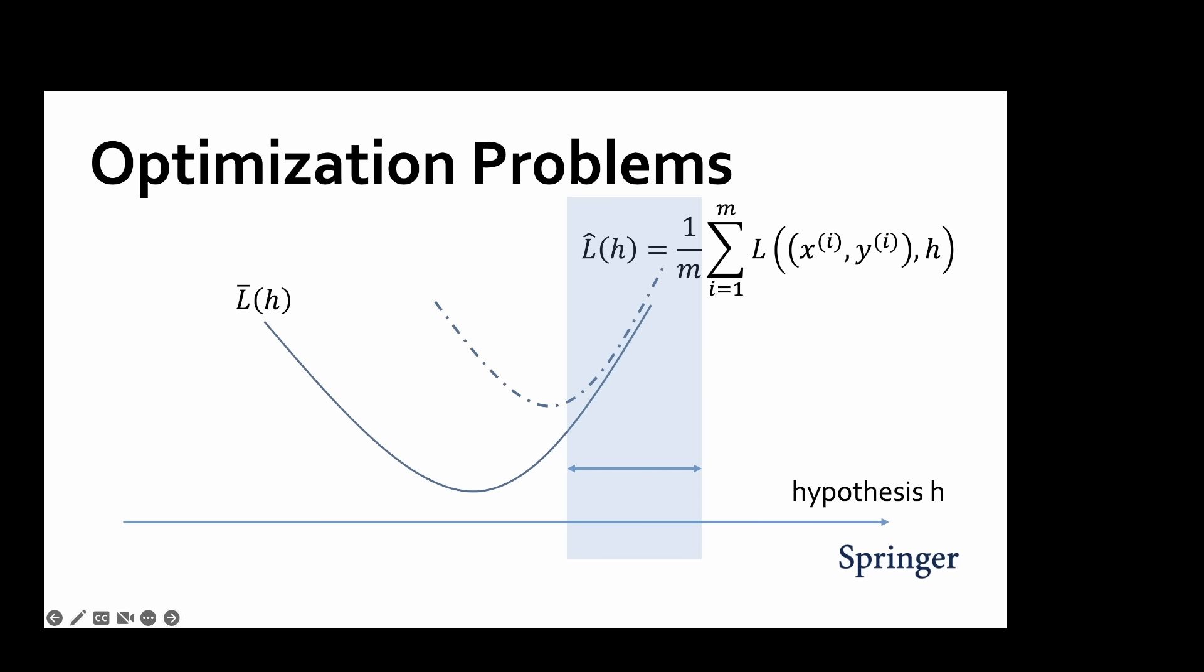It is important to note that empirical risk minimization is only an approximation of the ultimate goal of machine learning. Indeed, the goal of machine learning is to find or learn a hypothesis with minimum risk. Empirical risk minimization is only successful if the empirical risk is a good approximation of the risk.